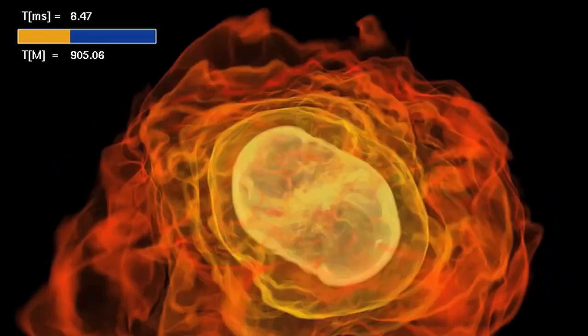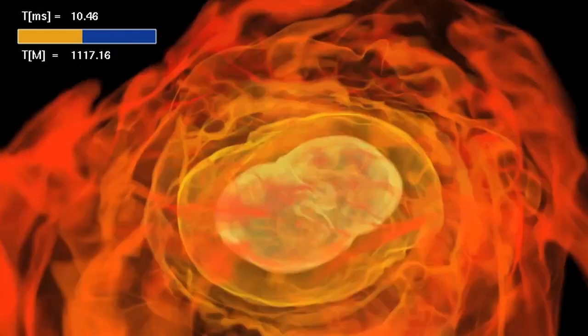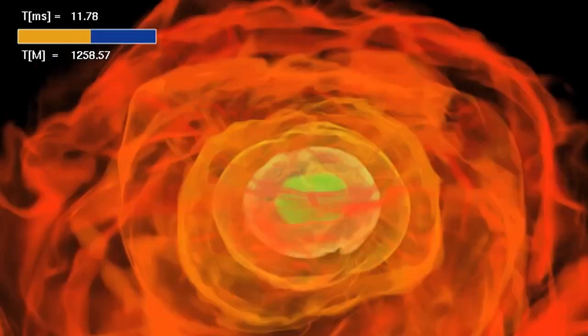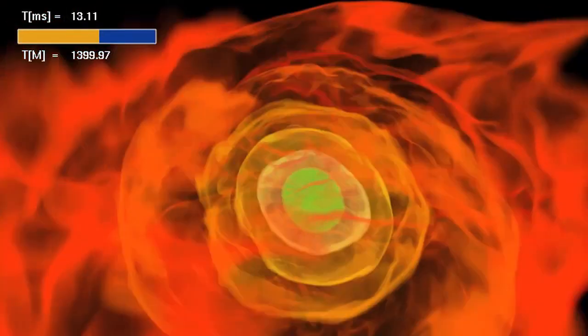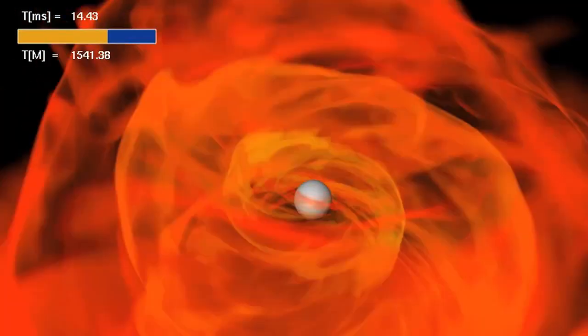Now, the simulations reveal the middle step of the process: how the merging star's magnetic field organizes itself into outwardly directed components capable of forming a jet.